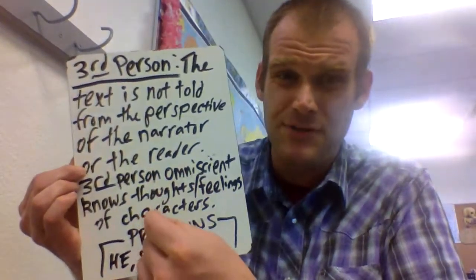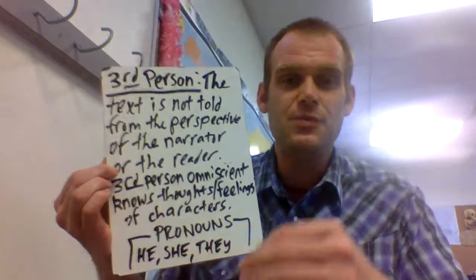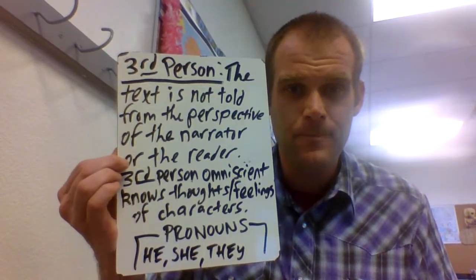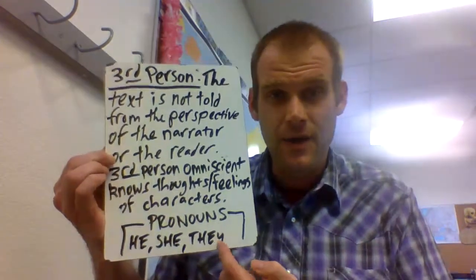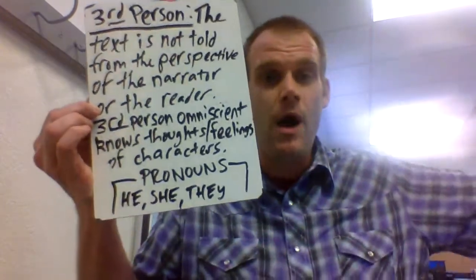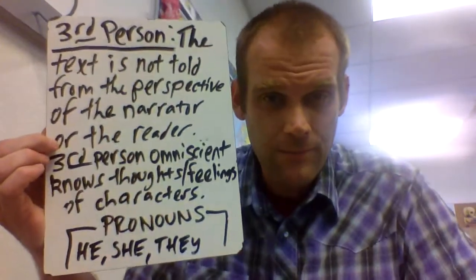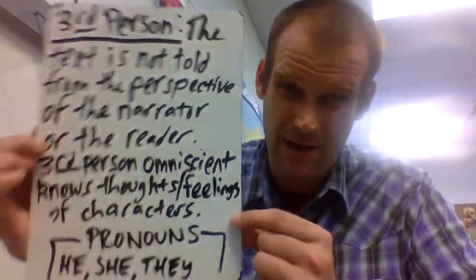Third person narration is well suited for fiction, but also very well suited for writing about history, because we always write in the past tense when using third person. The pronouns used with third person are he, she, and they — referring to someone who is not the reader or someone directly experiencing the story. For example: 'he walked down the street,' 'she got a glass of water,' or 'they went to school.' This is used mostly in fiction, but especially when we write about history.